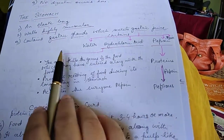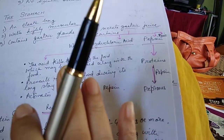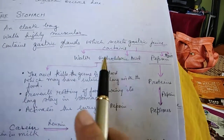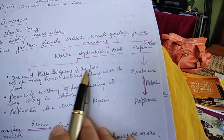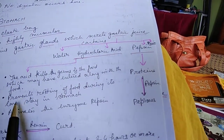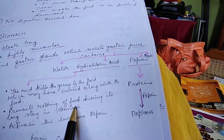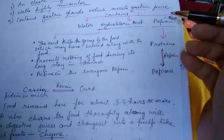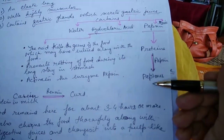Water mixes with the bolus and makes it semi-solid. Hydrochloric acid kills the germs that may have entered along with the food, prevents the rotting of food during its long stay in the stomach, and activates the enzyme pepsin. Pepsin converts proteins into peptones.